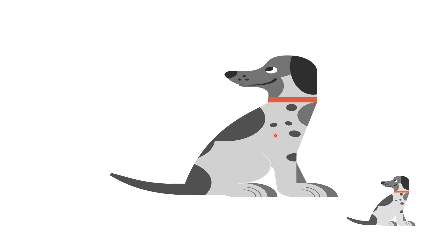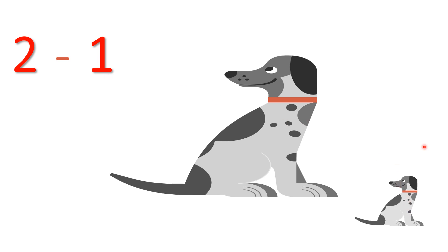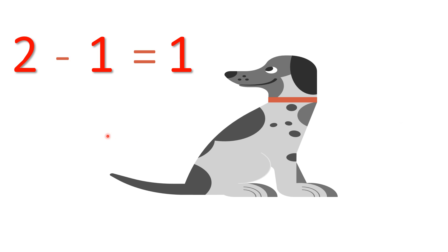Here the number of dogs are 2. 1, 2. We will write 2 minus 1. 2 minus 1 — minus 1 means one dog ran away. One dog ran away, so the number of dogs left equals 1. 2 minus 1 equals 1.